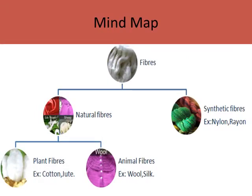Here is a mind map on Fibers. A material which is available in the form of a thin and continuous strand is called a fiber. There are two types of fiber: natural fiber and synthetic fibers. In natural fibers, we have two types — plant fibers and animal fibers. The fibers obtained from plants are called plant fibers; examples are cotton and jute. The fibers obtained from animals are called animal fibers; examples are wool and silk. Synthetic fibers are man-made fibers; examples include nylon and rayon.